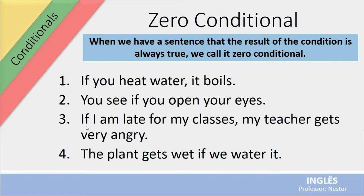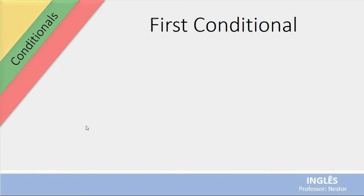One more example. The plant gets wet if we water it. E aí foi onde eu comecei explicando pra vocês. Deixei aqui por último pra vocês entenderem. Beleza? Tranquilinho? Vamos lá. Fora a condicional tipo zero, o zero condicional, a gente tem the first conditional.